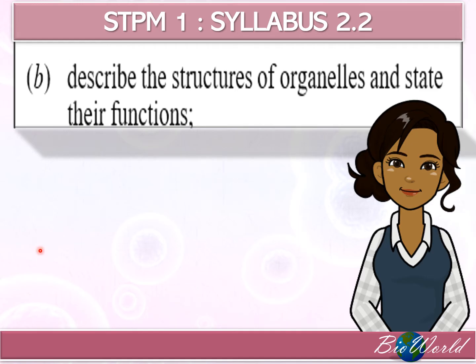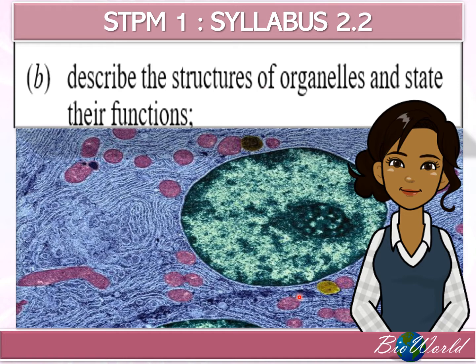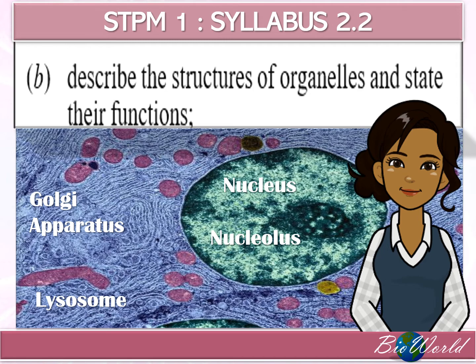Hello there! We meet again in our final episode of Syllabus 2.2, which is to describe the structure of the lysosome. Here you can see a picture of the cell. The lysosome is not this large circle — that circle is the nucleus, where you can see the nucleolus in the nucleoplasm. Outside, you can see the cisternae of the Golgi apparatus, and at the tips of the cisternae you can find these tiny blue circles, which is the organelle of discussion today: the lysosome. So come join me in BioWorld to explore the lysosome.